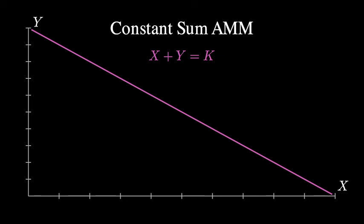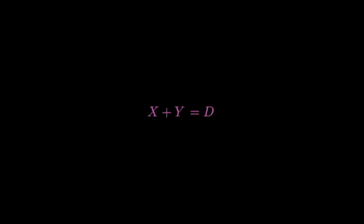In Stableswap, we combine the constant product AMM with the constant sum mechanism by adding the two mechanisms. To encode our knowledge, assets will always trade near the same price, while also giving availability and liquidity at any price. We dynamically weight how much each mechanism contributes using a parameter I'll call gamma.